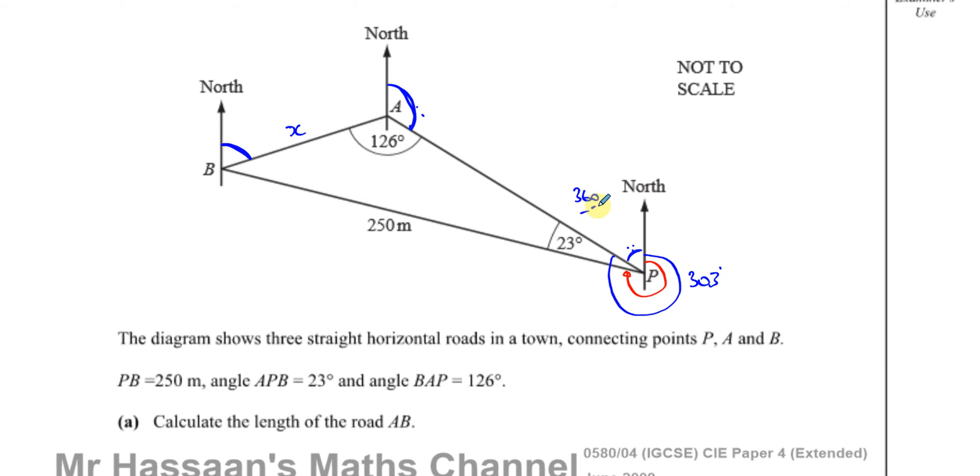So this angle is 180 minus 57, which is 123 degrees. This is 57 because if you go all the way around you've got 303, so 303 taken away from 360 is 57. These two angles add up to 180, so 180 minus 57 is 123.